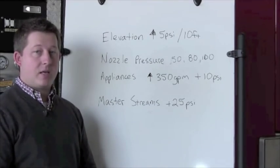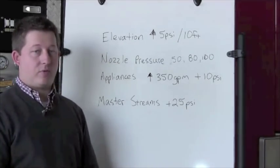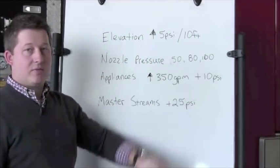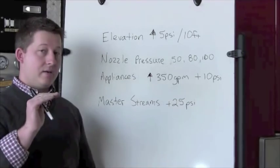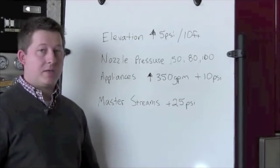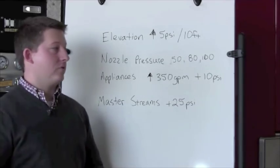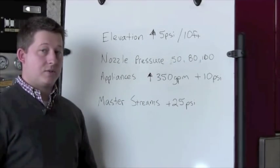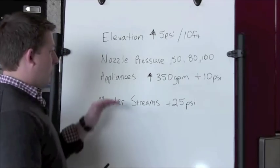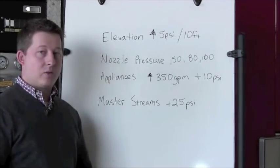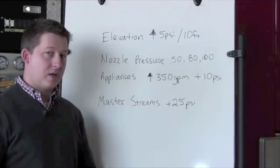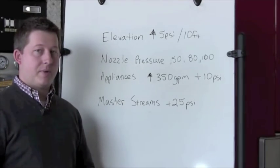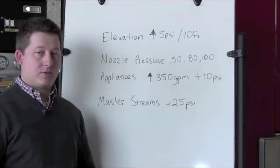Here's a list of things to keep in mind when calculating pump discharge pressure and friction loss. For elevation pressure, add 5 psi for every 10 feet, or divide the height in half — and for a high rise, don't count the first floor, only count the floors above the first. Nozzle pressure is usually 50, 80, or 100 psi, but many nozzles operate at 75 psi. For appliances, if you flow more than 350 gallons per minute, add 10 psi for friction loss — that's a rule of thumb. For master streams, add 25 psi of friction loss.